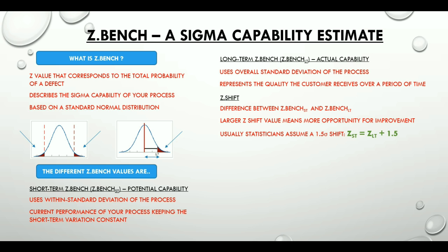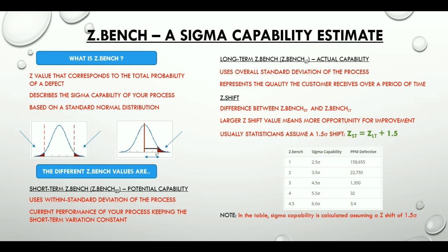Here is the ZBench to sigma capability conversion table. Sigma capability here is calculated assuming a Z shift of 1.5.